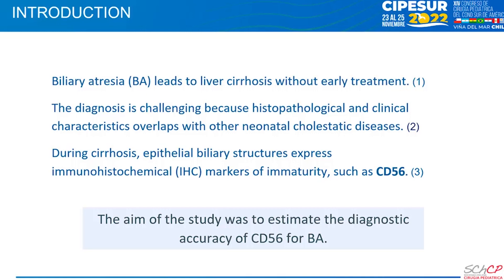The diagnosis of biliary atresia can be challenging as its histopathologic features overlap with those of other pediatric cholestatic liver diseases. The most helpful hallmark of biliary atresia on histology is portal fibrosis and bile duct proliferation. However, a similar pattern can be found in other causes of cholestasis, such as familial intrahepatic cholestasis, neonatal hepatitis, and Alagille syndrome, among others.